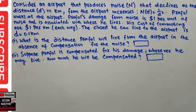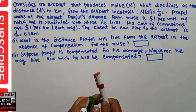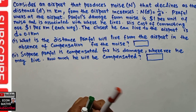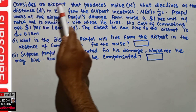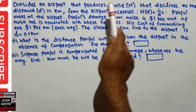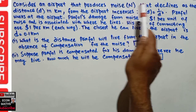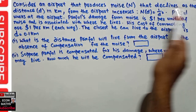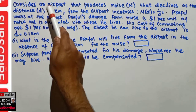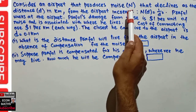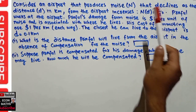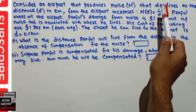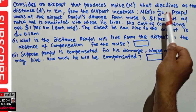In this video we will solve a problem that was asked by a person on the Telegram channel of Econ Maths. The question is: consider an airport that produces noise that declines as the distance in kilometers from the airport increases — that means noise is a function of distance.